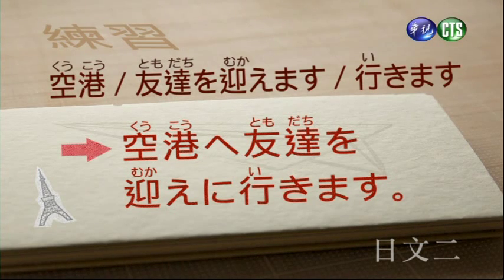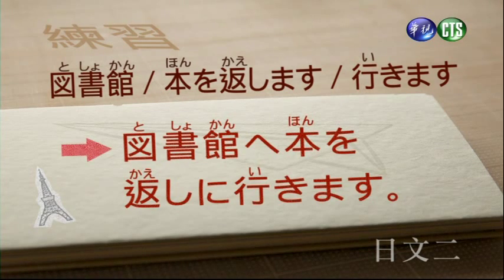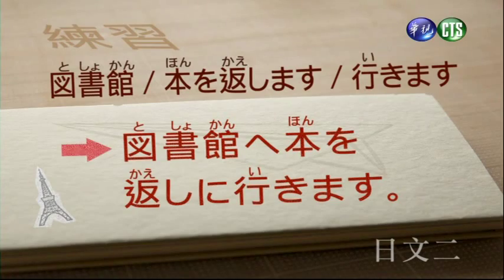友達を迎えに行きます（去迎接朋友）。図書館、本を返します、行きます，會變成：図書館へ本を返しに行きます（去圖書館還書）。這是去的動作目的。以上學到的是動作目的的に的用法，後面要搭配移動性動詞。接下來要看第二個句型。